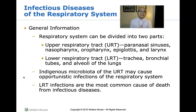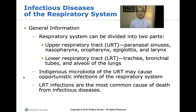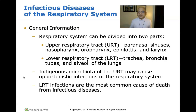In the upper respiratory tract, there are indigenous microbiota — microorganisms that normally reside there and comprise the normal ecological niche. However, in some cases, they may cause opportunistic infections, taking advantage of hosts with weak immune systems — such as patients with AIDS, those undergoing chemotherapy, or those taking immunosuppressive drugs after a renal transplant.